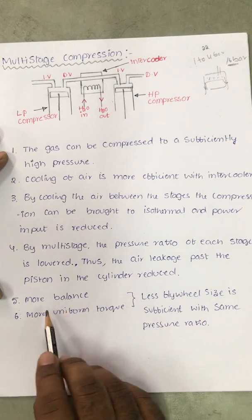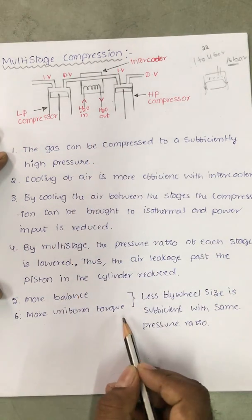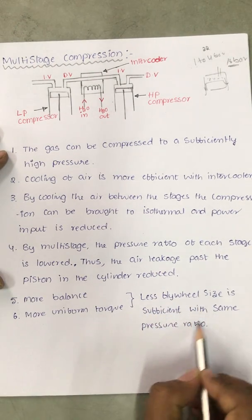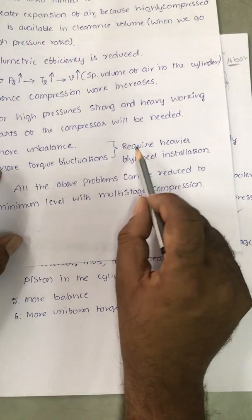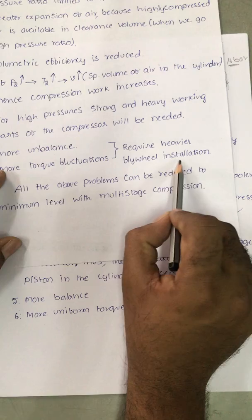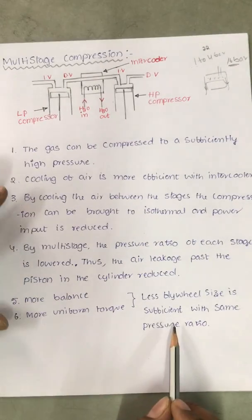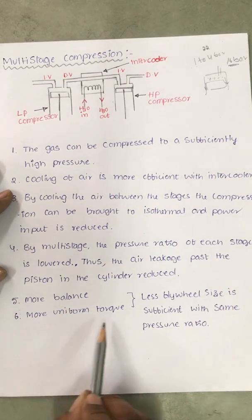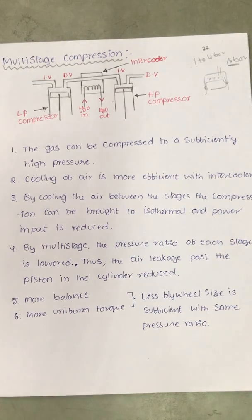Multistage compression provides more balance and more uniform torque. With more uniform torque, a smaller flywheel size is sufficient. Compared to single stage compression — which requires a larger, heavier flywheel for the same pressure ratio — multistage compression achieves better balance and uniform torque with less flywheel size. These are the key differences between single stage and multistage compression.